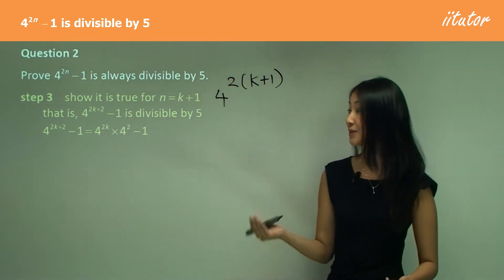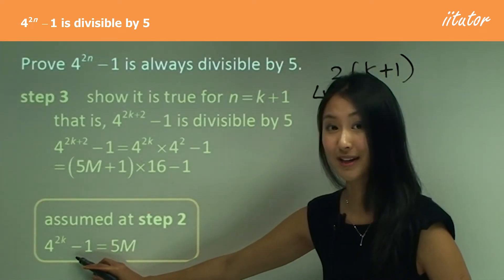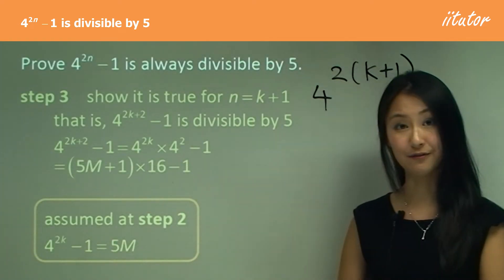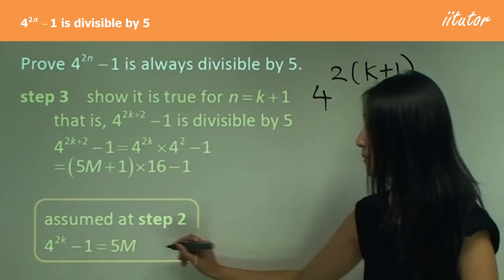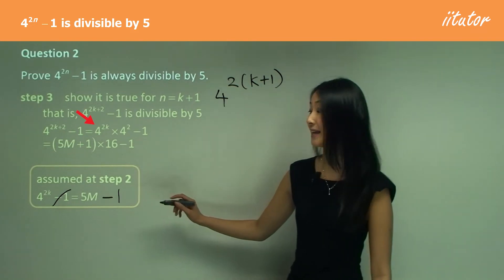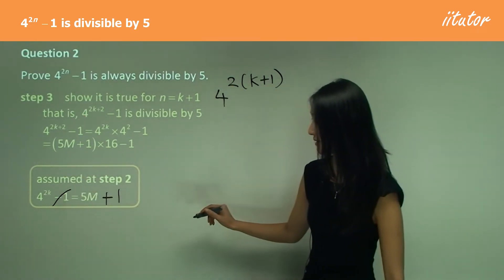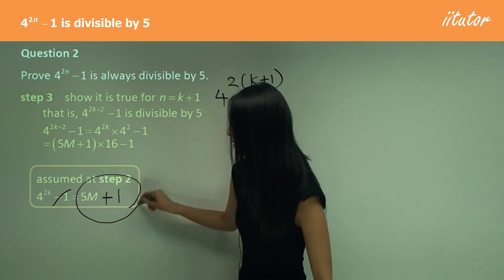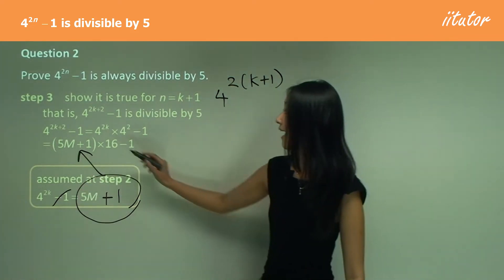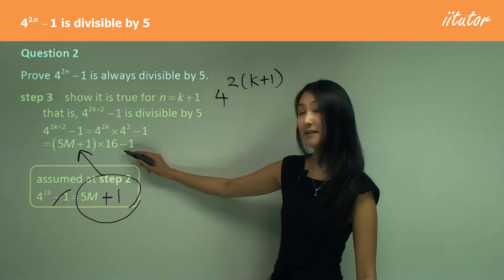Now we look back into the assumption that we made in step 2: that 4 to the power of 2k minus 1 equals 5m. So therefore, by subtracting 5m minus 1, we can say that 4 to the power of 2k equals 5m plus 1, because we've added that 1 onto this side. So now I substitute this into here. So I have (5m plus 1) times 4 squared, which is 16, minus 1.